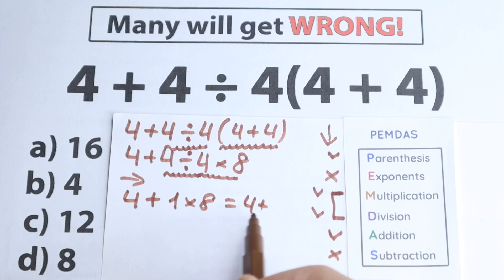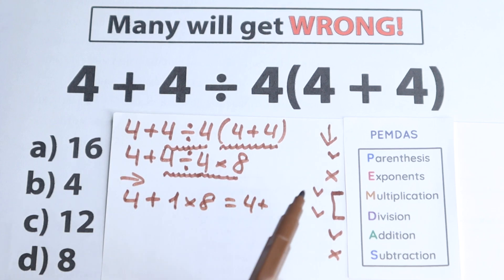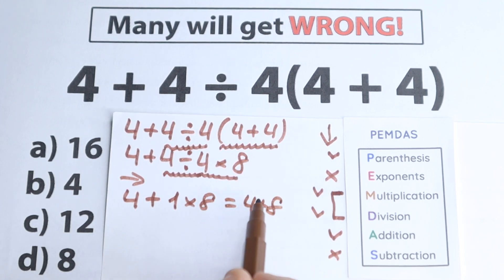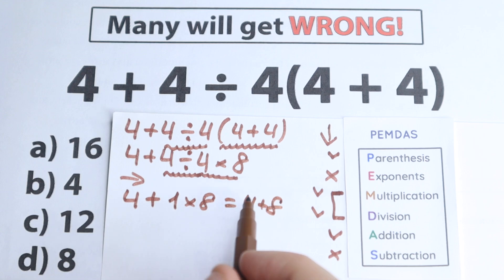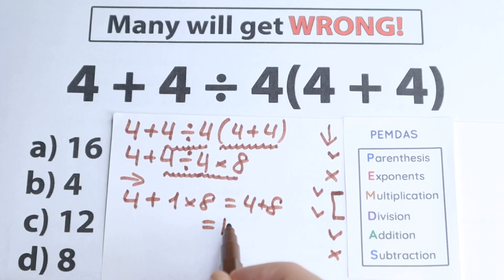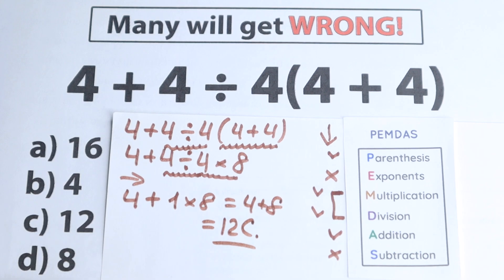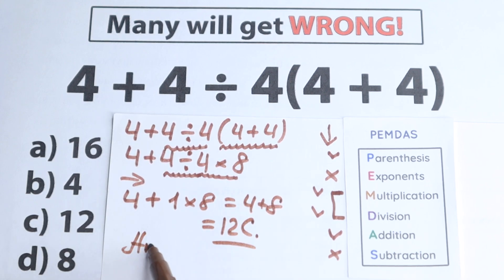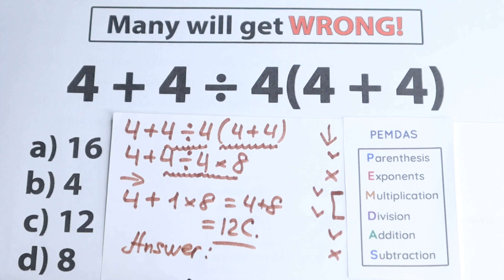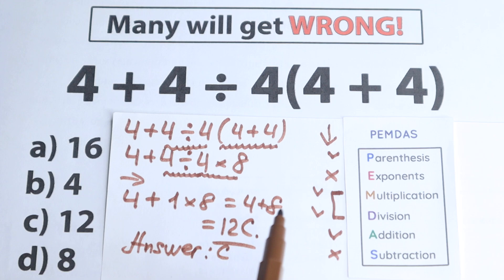We have 4 plus 1 times 8. As you can see, multiplication comes before addition. So we do 1 times 8 equals 8, then 4 plus 8 equals 12. This is option C. This is my solution to the problem. I hope you understand my thoughts — this is a topic with a lot of country-specific discussion, and I hope my explanation is clear.